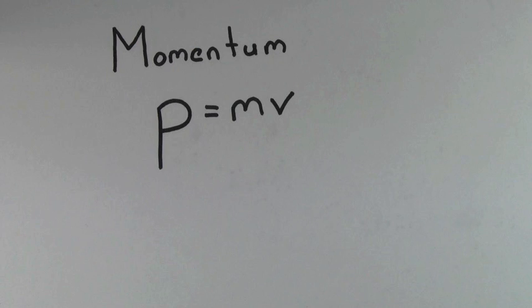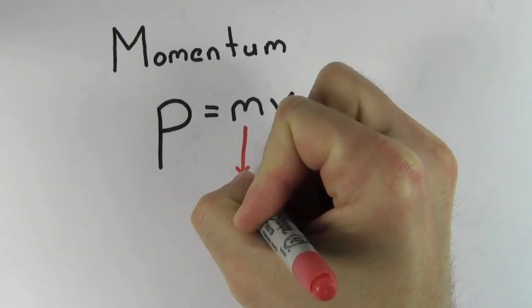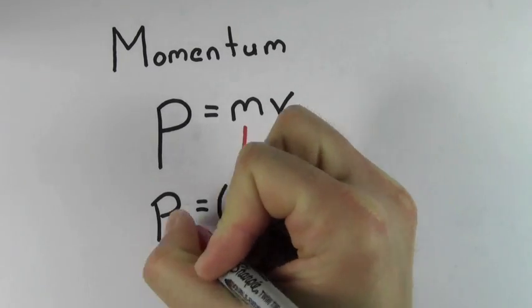but p equals mv. In other words, if momentum equals mass times velocity, how could light, which has no mass, ever have momentum?